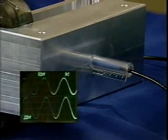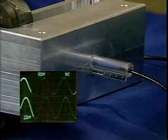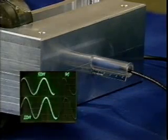The top trace is the current in the primary of the transformer, the driving current. The bottom trace is the probe signal, the magnetic flux density.